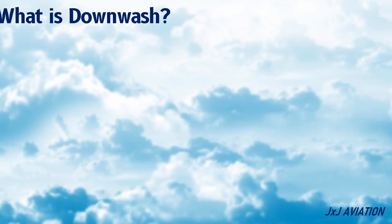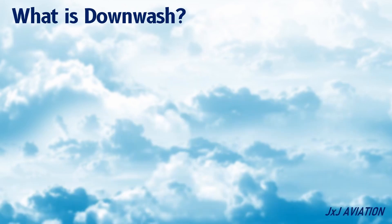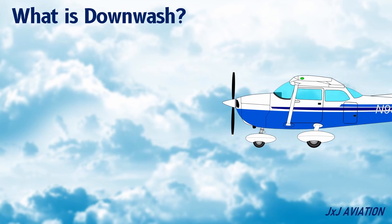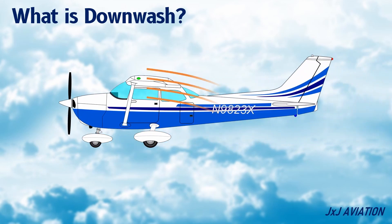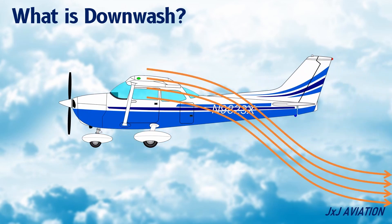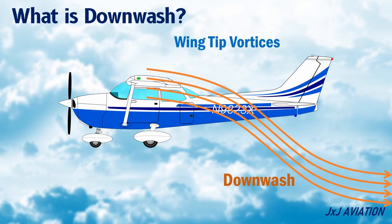What is downwash? Downwash is the downward flow of air at the trailing edge of the wing. Downwash is created because of the wing tip vortices. Wing tip vortices refer to the circulation of air at the wing tips.